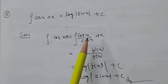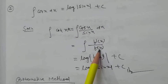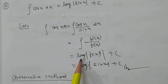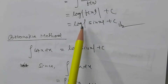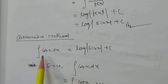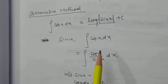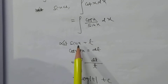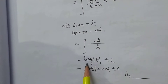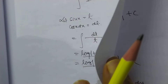Integration of cot x dx equals log|sin x| + c. We write cot x dx as cos x/sin x dx. Here f(x) is sin x and its dc is cos x dx, so by the log formula it is log|f(x)| + c, that is log|sin x| + c. Alternative method: let sin x = t, so cos x dx = dt, giving the integral of dt/t = log|t| + c = log|sin x| + c.